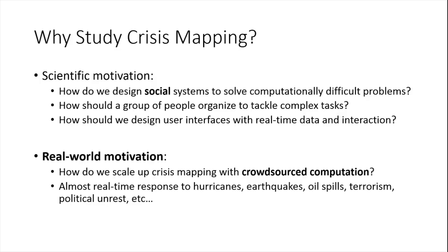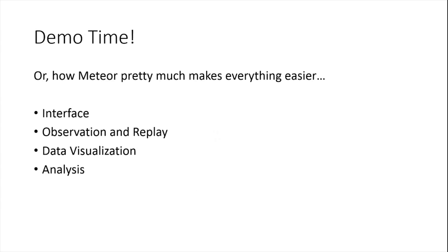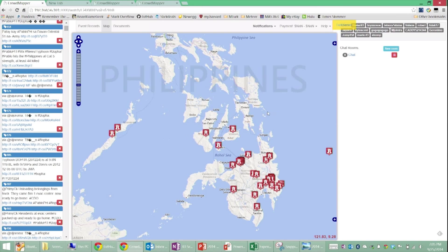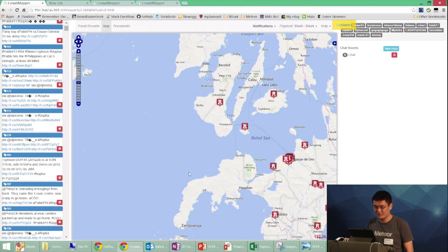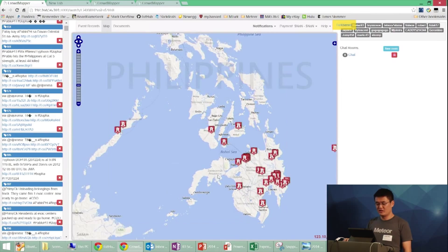If we can do that effectively, we should be able to actually respond better to not just natural disasters in the future, but also man-made disasters. So let me show you a demo of what I've been building with Meteor and how I'm studying this. This is the interface I've built for collaborative crisis mapping. This is data from Hurricane Pablo, which hit the Philippines a couple of years ago in 2012.